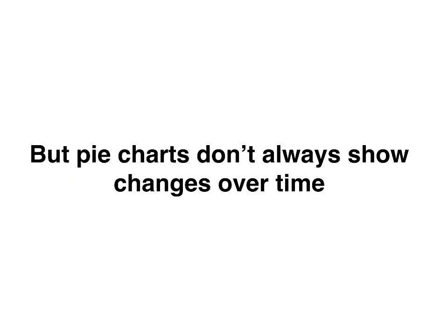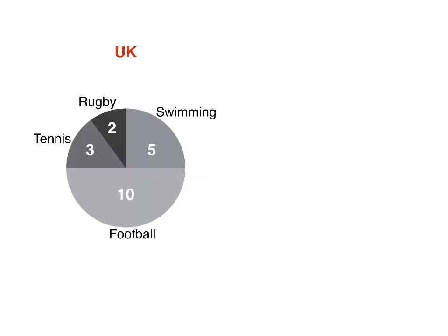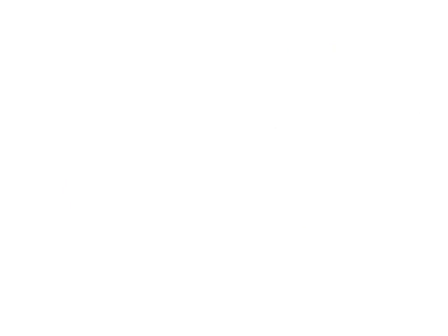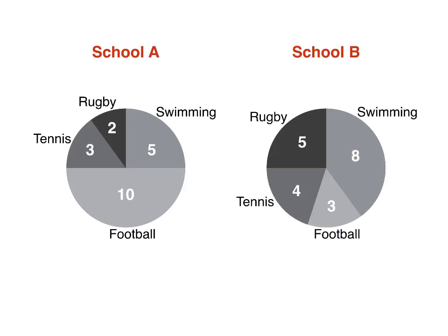But pie charts don't always show changes over time. They might show two countries — for example, this is the pie chart for children in the UK, and we could have another pie chart for children in Australia. In this case, you can't talk about the numbers increasing or decreasing; you can only compare the two countries. Another type of item you might see is simply school A and school B. Again, you're comparing the numbers, but you can't talk about increasing or decreasing because there is no time shown. You can only talk about increase or decrease when there are two different times or a time period.